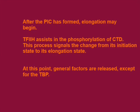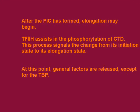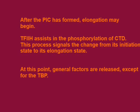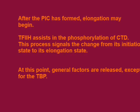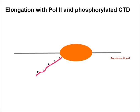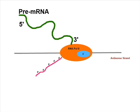After the pre-initiation complex is finished, elongation can begin. TF2H assists the phosphorylation of the C-terminal domain. This process signals the change from initiation to elongation. At this point, the general factors are released, except for TBP.